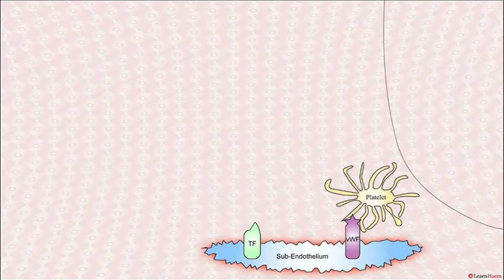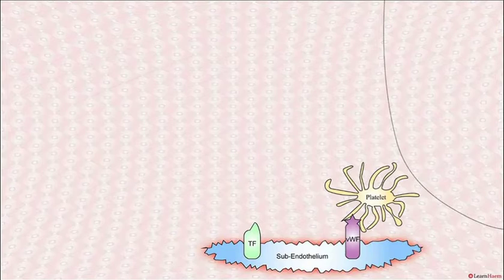The first players on the scene are the platelets. Von Willebrand factor, especially in the presence of turbulent blood flow, which is what occurs around the area of damaged endothelial cells,